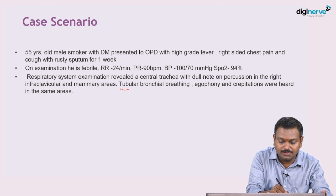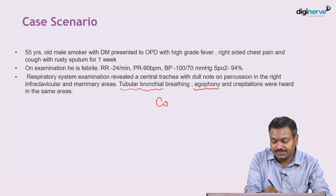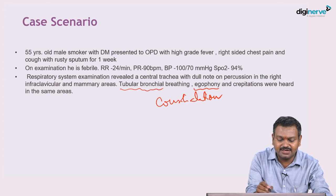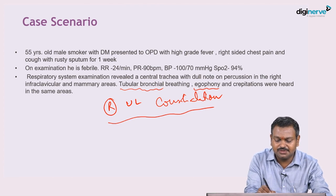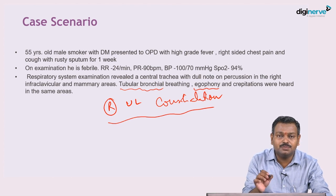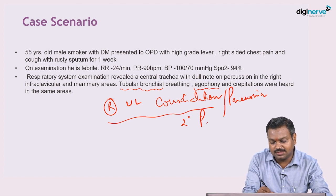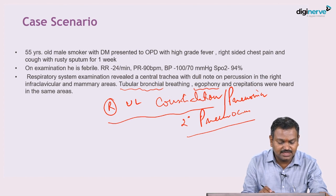Tubular bronchial breathing and egophony are specific for consolidation. This patient has consolidation in the right infraclavicular and mammary area, possibly involving the right upper lobe. The diagnosis is right upper lobe consolidation or pneumonia, possibly secondary to pneumococcus — Streptococcus pneumoniae — which is the likely causative organism.